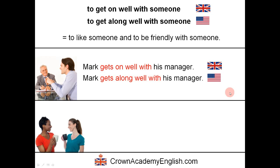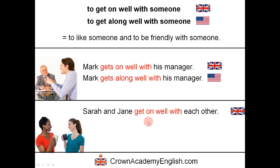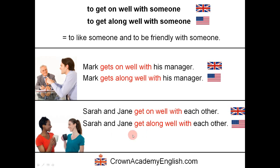Another example: 'Sarah and Jane get on well with each other' — 'each other' is a reciprocal pronoun, meaning Sarah gets on well with Jane and Jane gets on well with Sarah — it goes in both directions. The American version is 'Sarah and Jane get along well with each other.' They like each other and are friendly with each other.